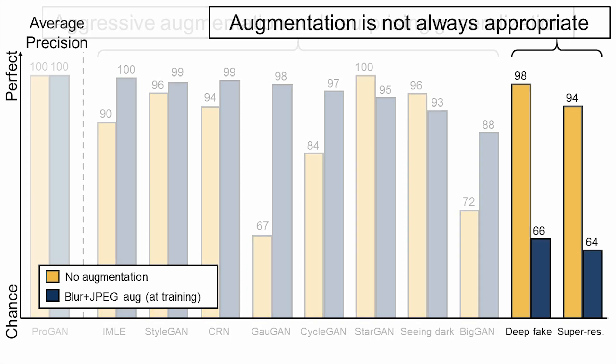Sometimes augmentation doesn't help though. To detect super-resolution, we need to look at high frequencies, so blur augmentation hurts performance. However, the reason for the performance drop on deepfakes still remains unclear. Unlike other methods, deepfakes is a complicated algorithm with a multi-stage pipeline, and some of those stages are not performed by CNNs. It will be an interesting next step to identify why this is the case.